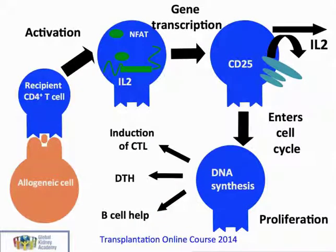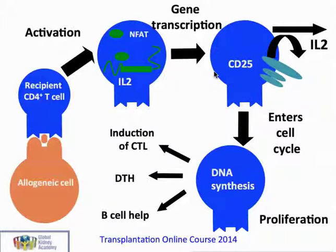As shown in the following diagram, the allogeneic cell from the orange individual has been recognized by the T cells from the blue individual, resulting in activation. The generation of IL-2 is critical in this response, and IL-2 secretion in both an autocrine and paracrine manner leads to activation of the CD4 T cell. This cell then enters cell cycle, generating many copies of the reactive clone of T cell, which then go on to induce other parts of the immune system in the effector response.